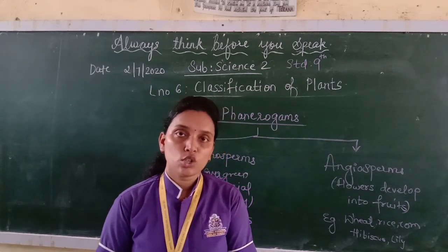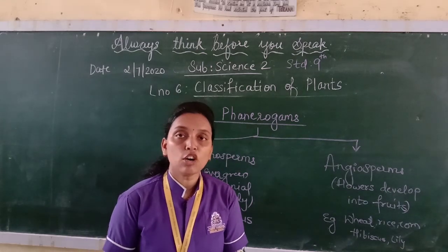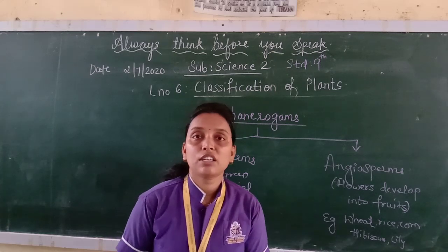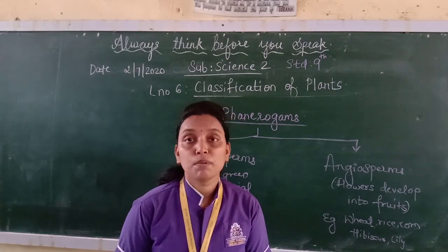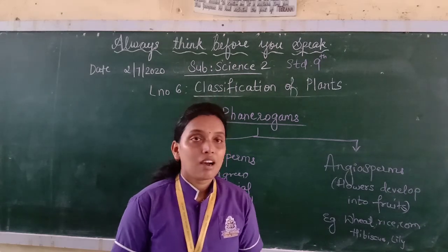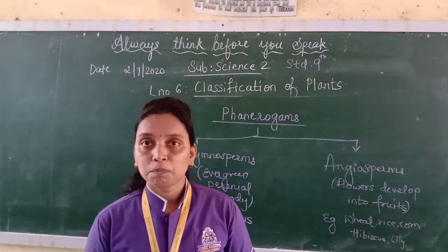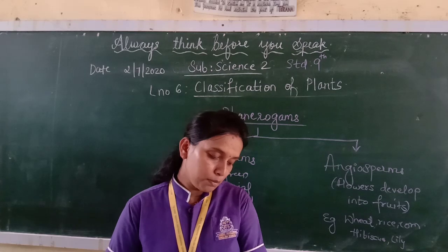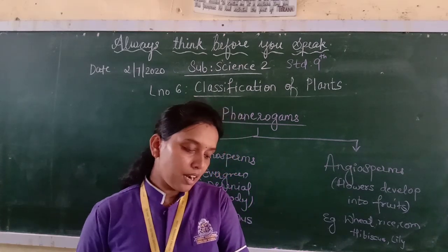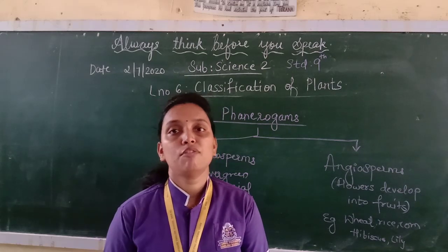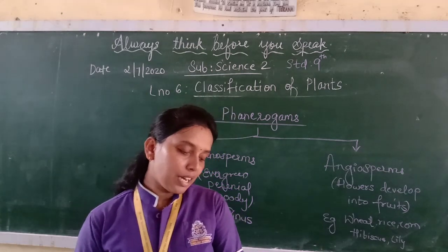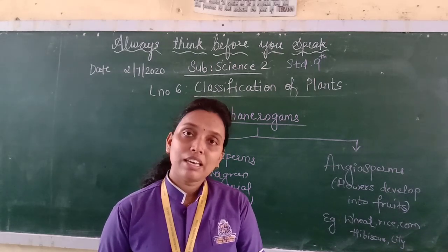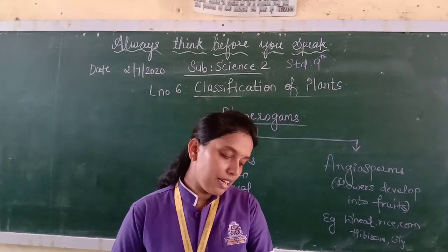The second division is angiosperms. 'Angios' means concealed or hidden, and 'sperms' means seeds. Angiosperms are the flowering plants and they occupy the majority of the earth's surface. The flowers these plants bear are reproductive organs — flowers develop into fruits and seeds are formed within the fruits. Since the seeds are enclosed by the fruit, they are called hidden seeds, and hence these plants are called angiosperms.